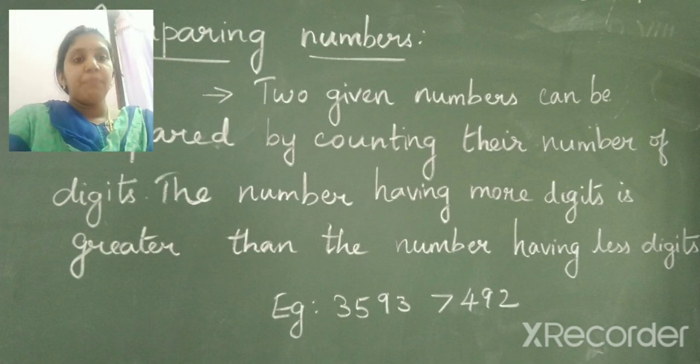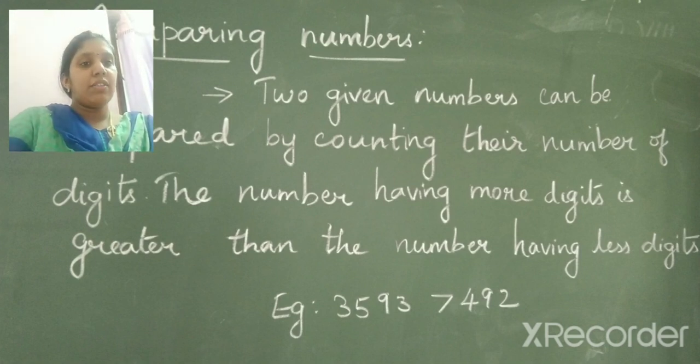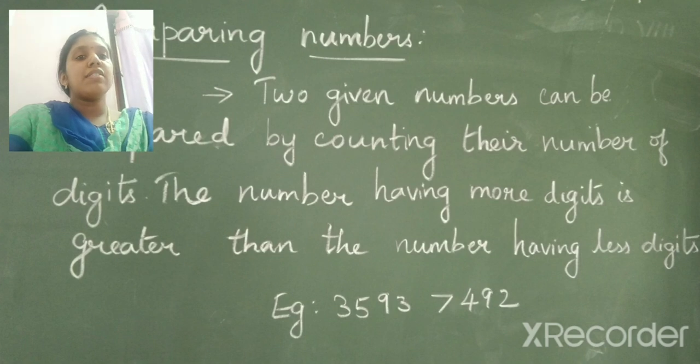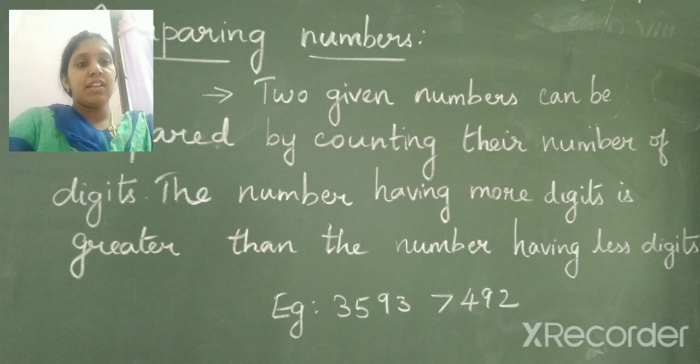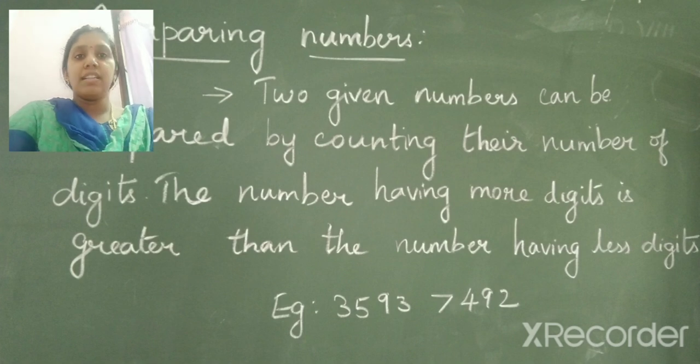Look at the example given. 3593 and 492. So in this example, the number of digits in 3593 is 4 and the number of digits in 492 is 3. So which is greatest? 3593. So we can say 3593 is greater than 492.